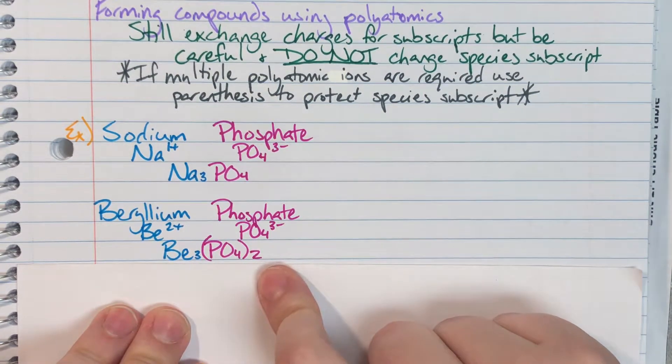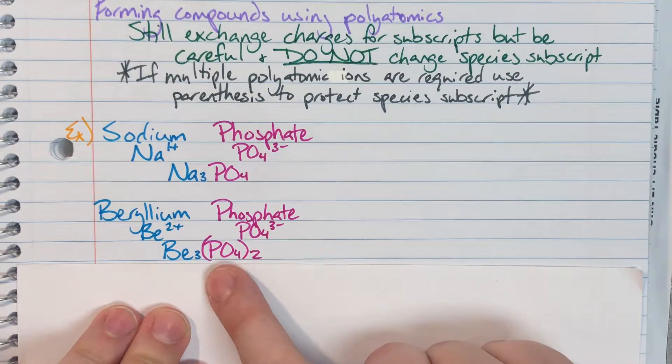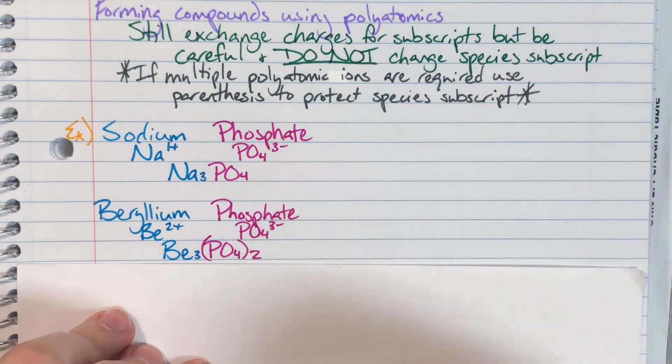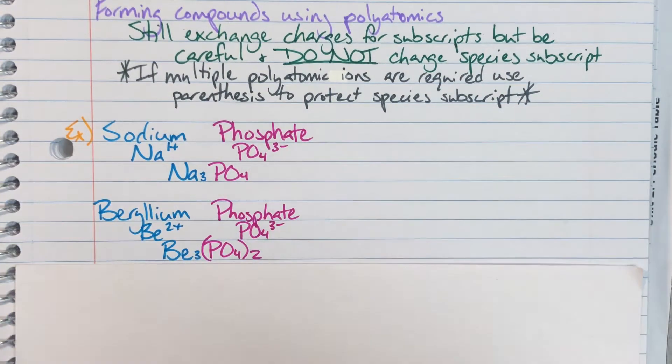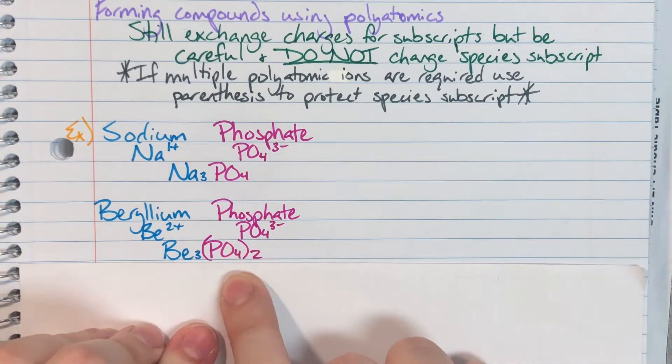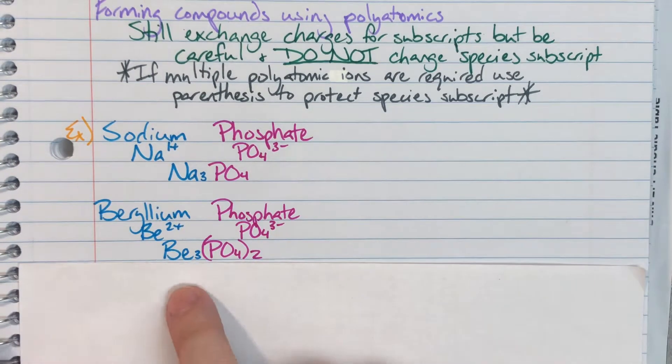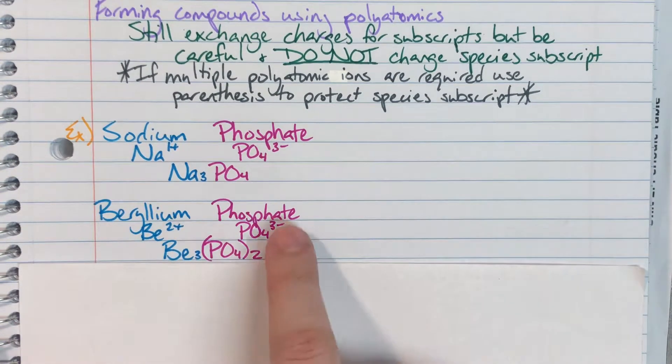If I did not have these parentheses, it would look like I had either 42 oxygens and one phosphorus, or some other mix up where I'm not actually denoting that I have only one phosphate present, because phosphate forms as a singular compound. So I have to denote that this bubble, this phosphate functions as a singular thing. And beryllium, of course, is going to get phosphate's three.